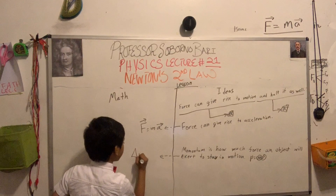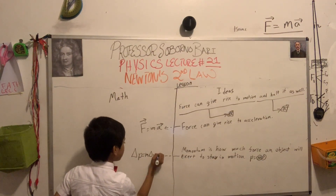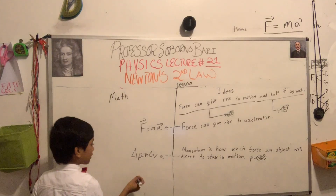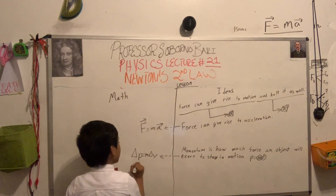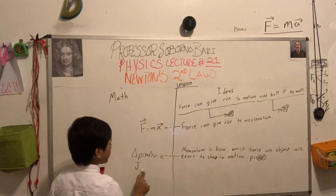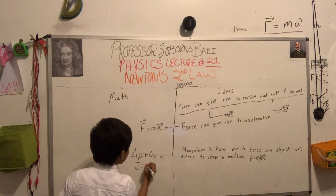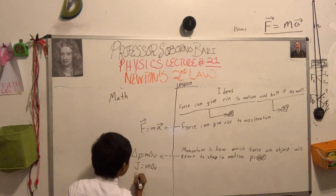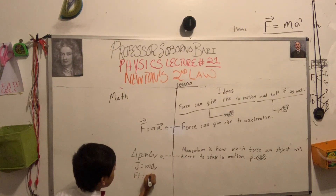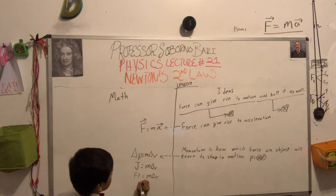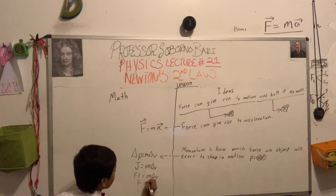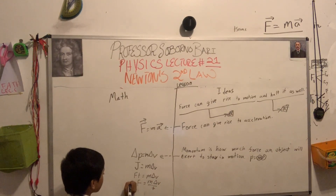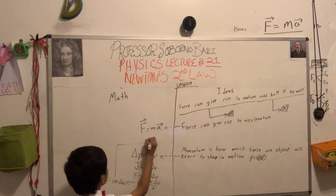Delta P equals M delta V. From a short theorem, delta P equals J — where J is impulse. And impulse is FT from the physics side. So FT equals M delta V, therefore F equals M delta V over T. V over T is A, so F equals MA.